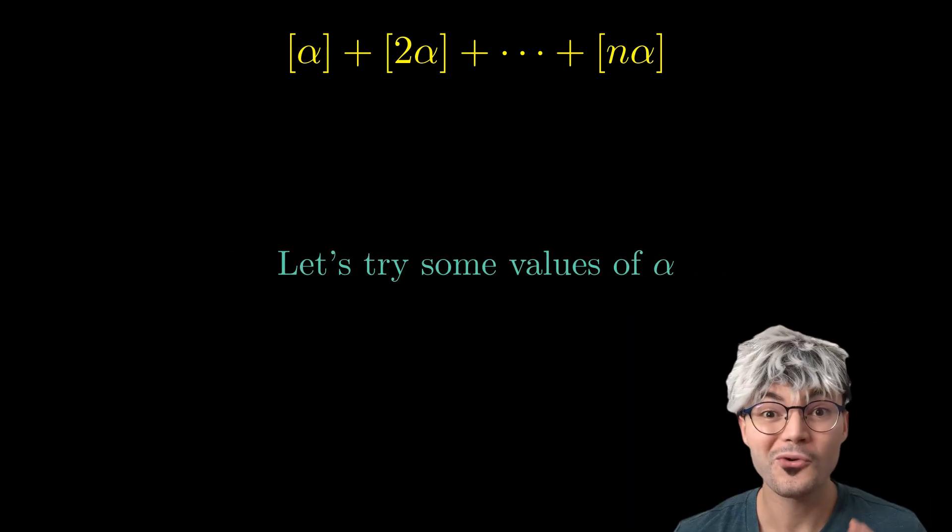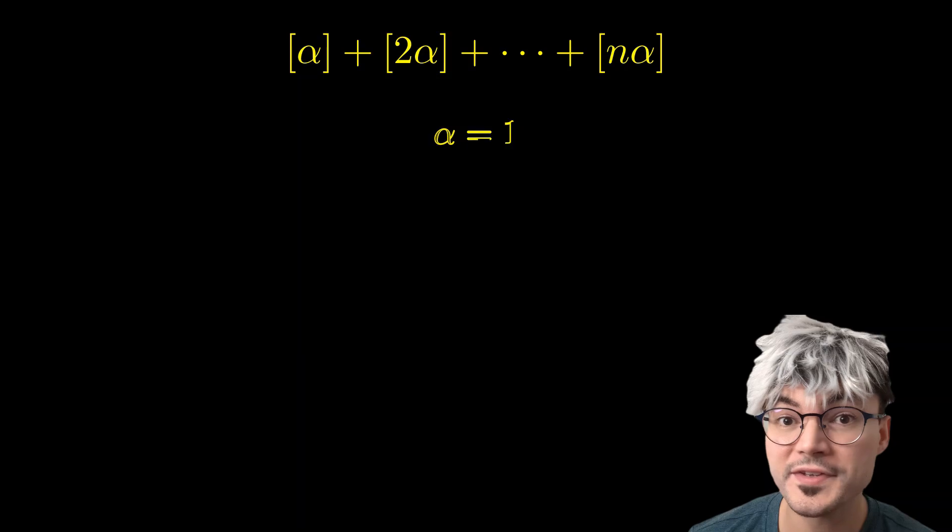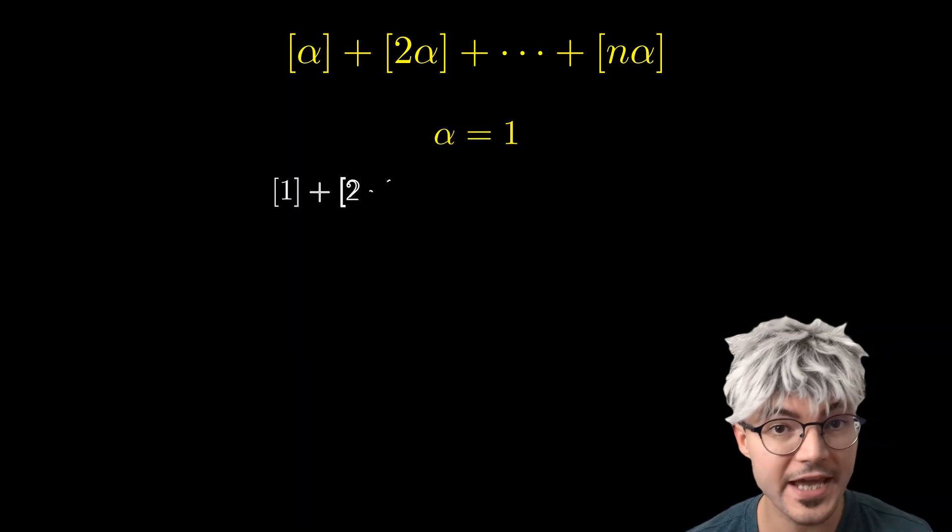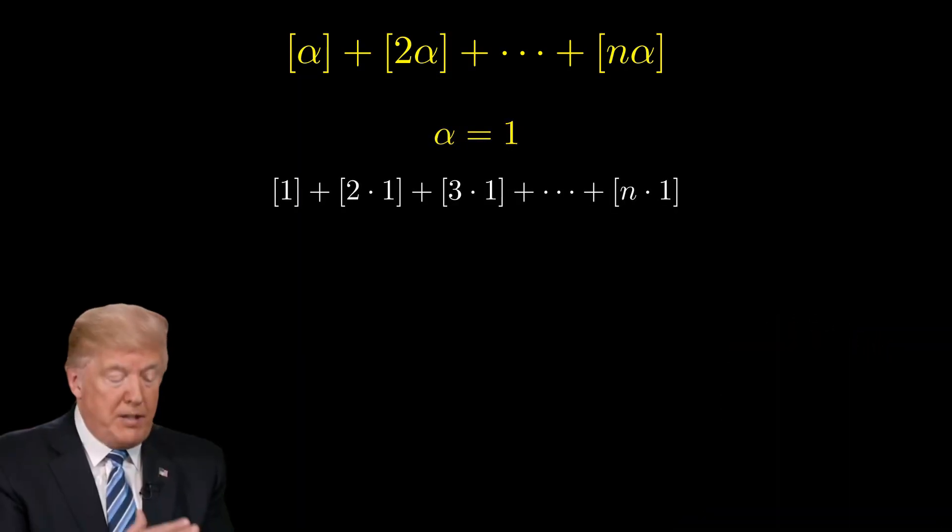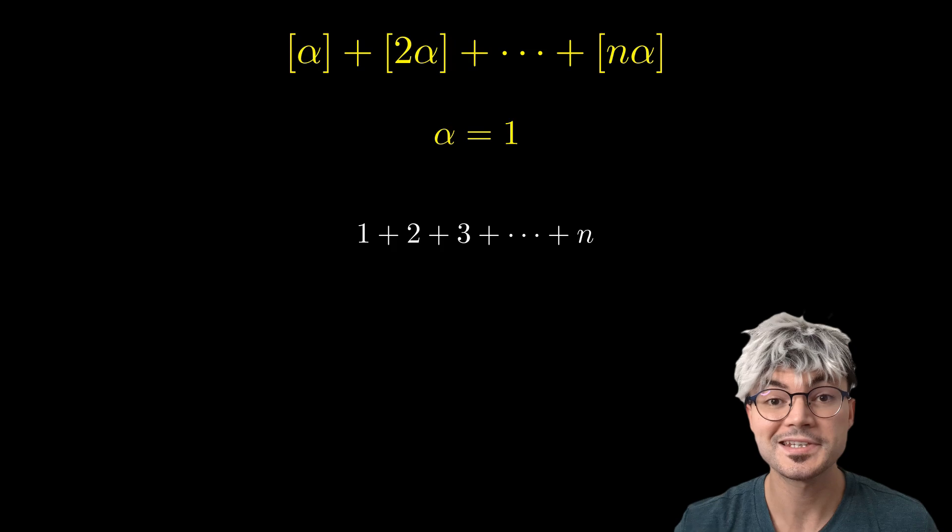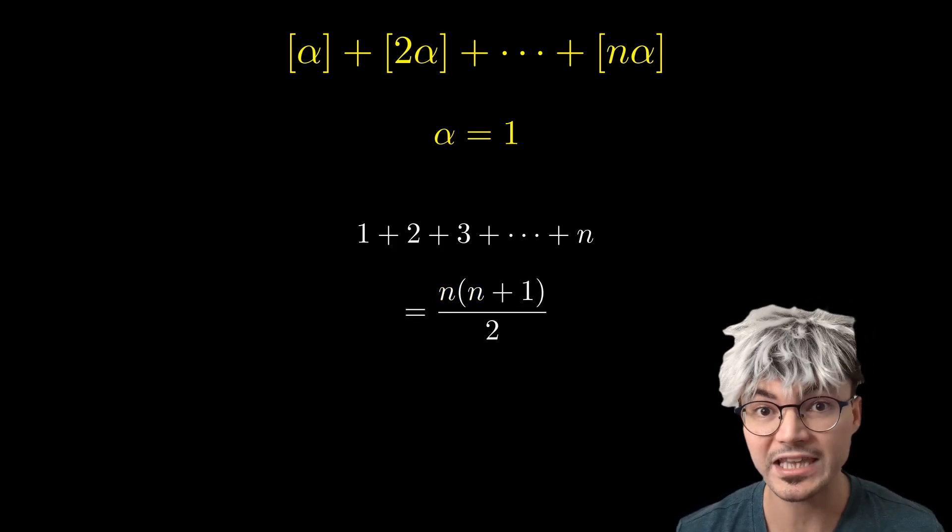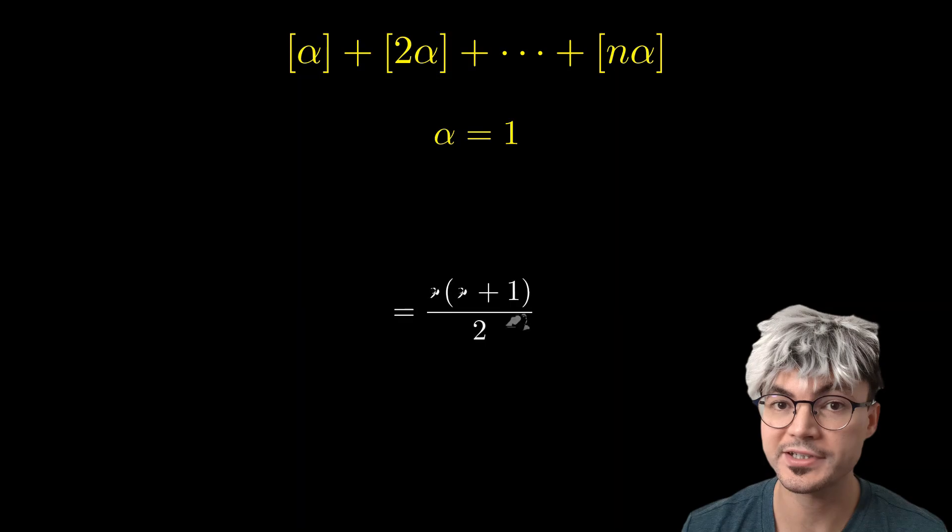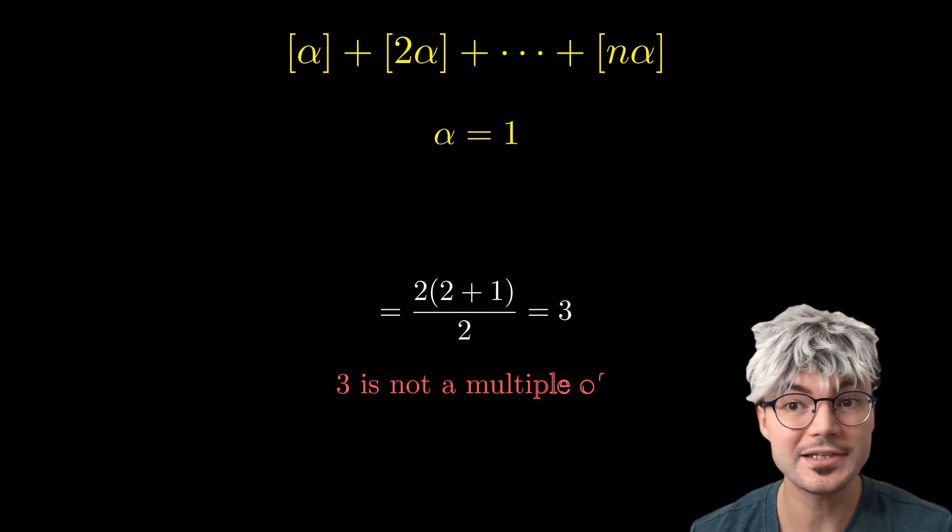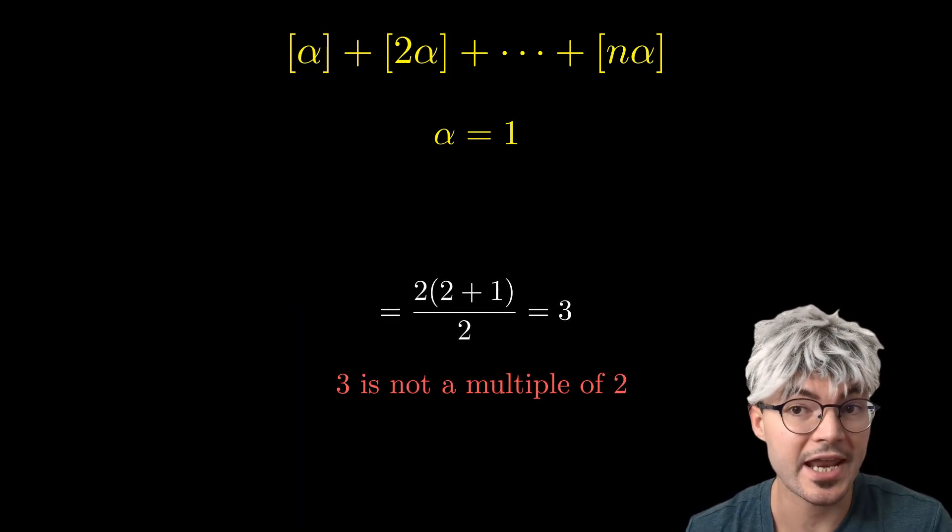Let's try some values of alpha. For alpha equals 1, the sum becomes the sum of the first n integers. That's a classic. Since our divisibility relationship should hold for all n, let's take n equals 2 for example. Well, we get 3, and 3 is not a multiple of 2, which is n.